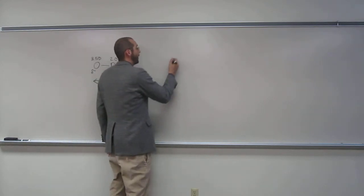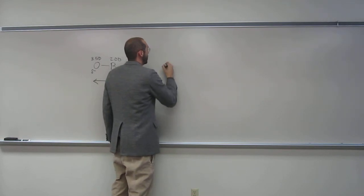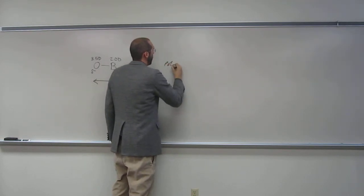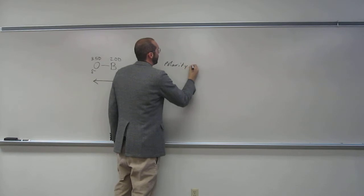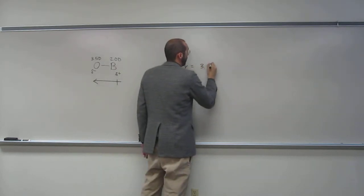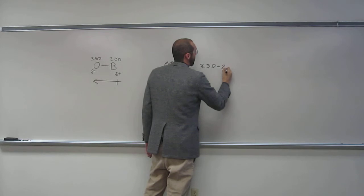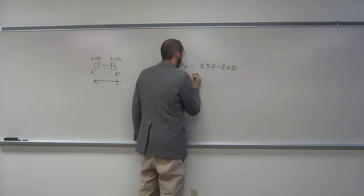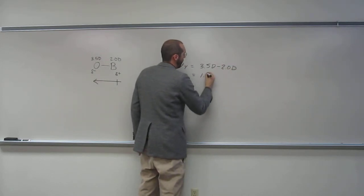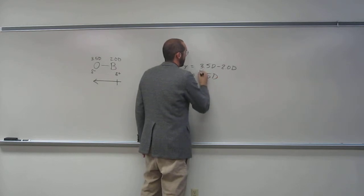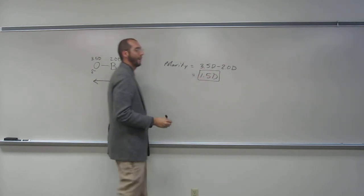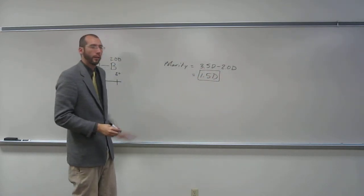So how do I know what the bond polarity is? Polarity is going to be 3.5 debyes minus 2.0 debyes, so that's 1.5 debyes, so that's a pretty polar bond.